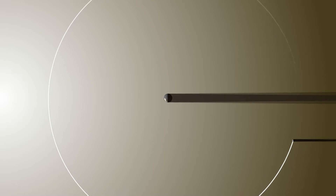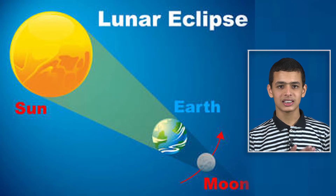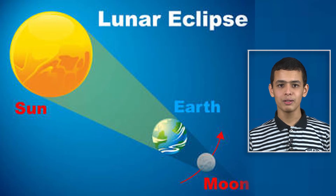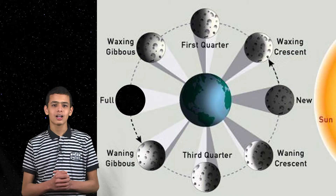The moon revolves around the Earth once a month. Thus, its relative location to the sun, with respect to Earth, changes. Sometimes it passes through Earth's shadow — the sun, Earth, and the moon become aligned. Then guess what? We get a lunar eclipse.